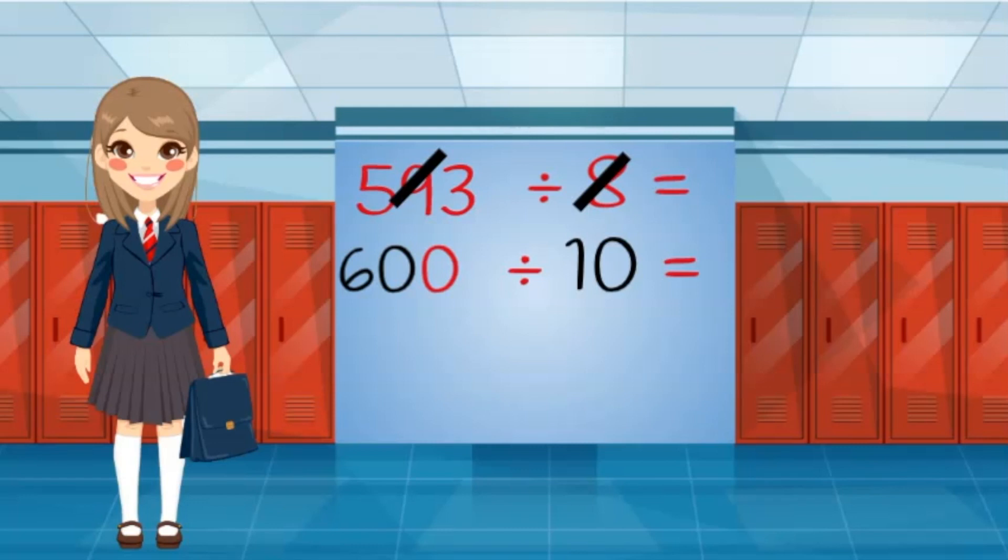60 divided by 10 equals 6, then I just add the remaining zero to the quotient to equal 60.